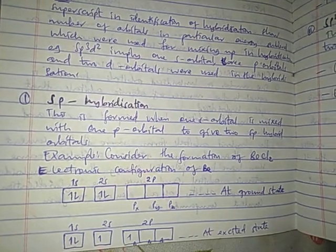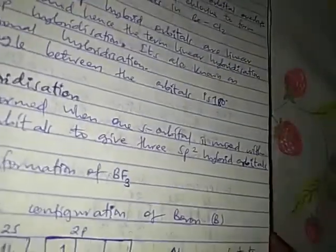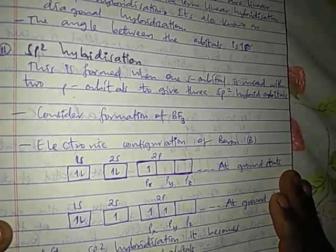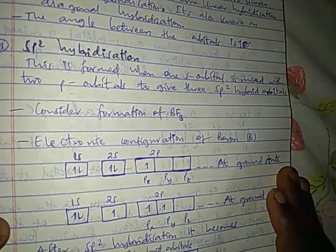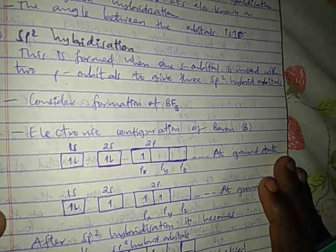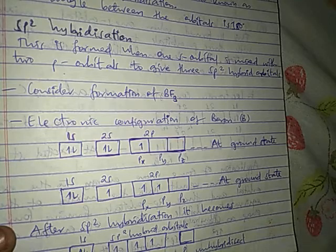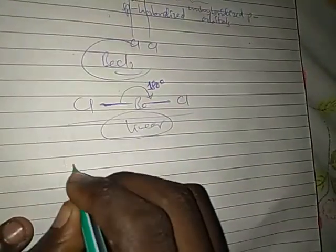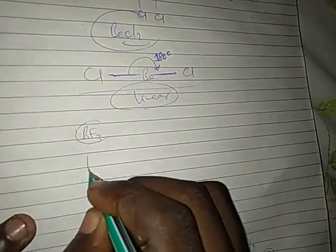Now let's jump to the next type of hybridization, which is sp2. SP2 is formed when one s orbital is mixed with two p orbitals to give three sp2 hybridized orbitals. Consider the formation of boron trifluoride. The electron configuration of boron is 1s² 2s² 2p¹.